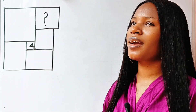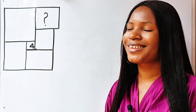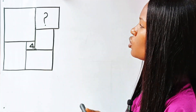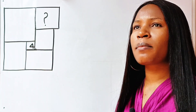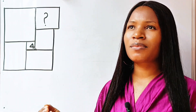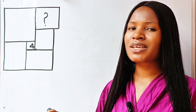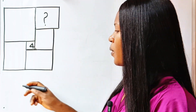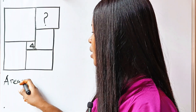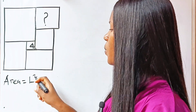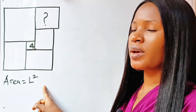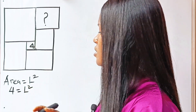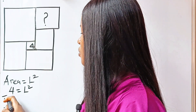We are given only one thing: the area of the smallest square is 4. Now, there is a reason the examiner gave us the area of the square — it means our solution will come from that particular formula. The area of a square equals length squared. In this case, area equals 4, so we have 4 = L². We take the square root of both sides.